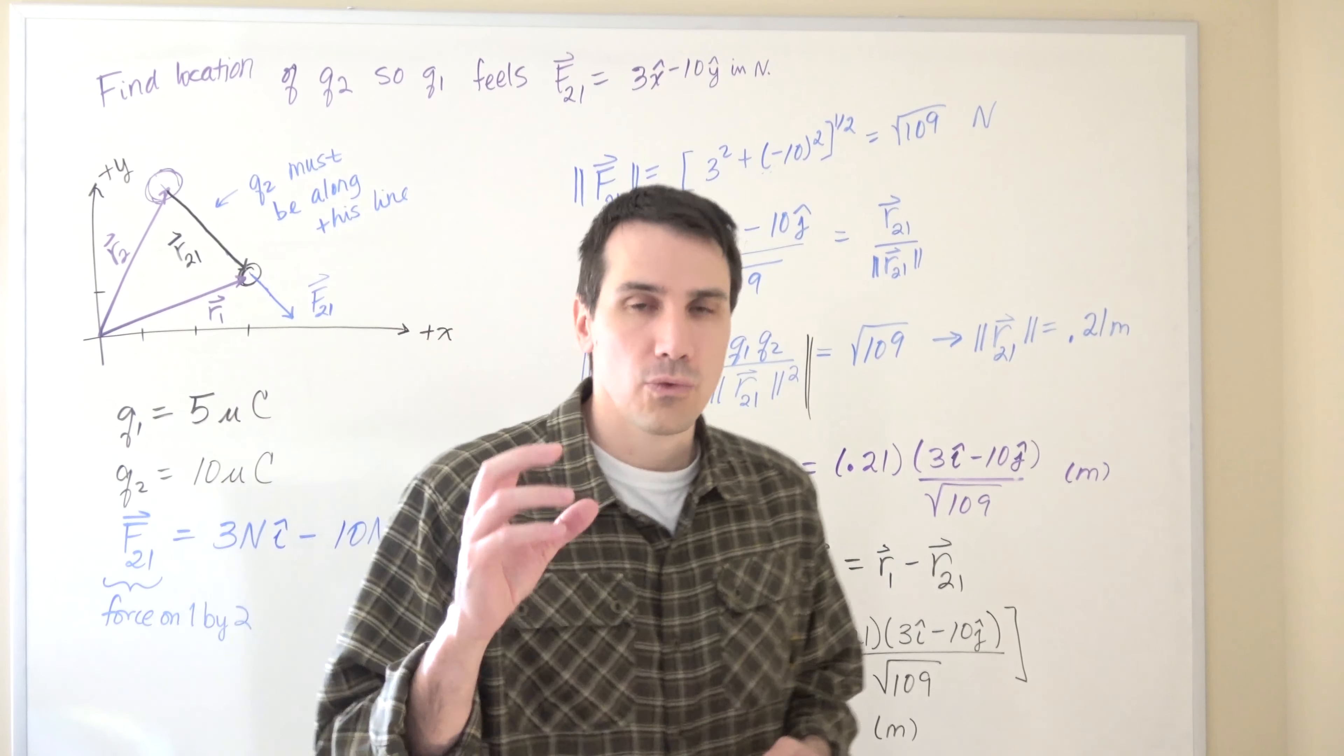To finish, let's just summarize exactly what we have done to solve this problem. We began by writing down all the information that we knew. Then what we did was we used only magnitudes to find the distance between these two particles.